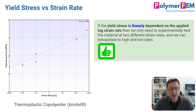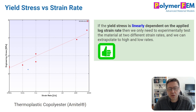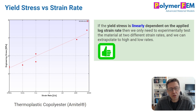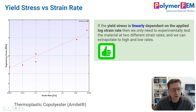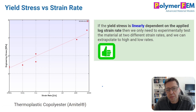Let's start by talking about a thermoplastic copolyester called Arnitel. This is a material I tested at different strain rates, measuring the stress-strain response. If I plot the stress value at a given strain — a secant stress value — as a function of strain rate, I get a linear straight line when plotting stress versus the logarithm of strain rate.